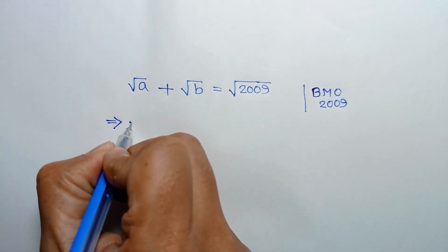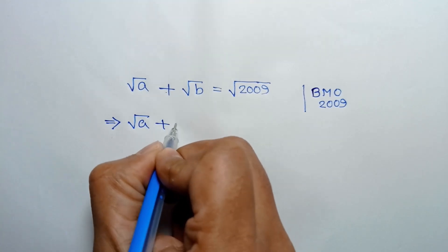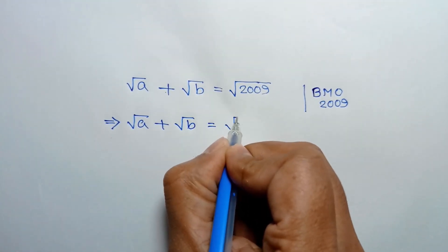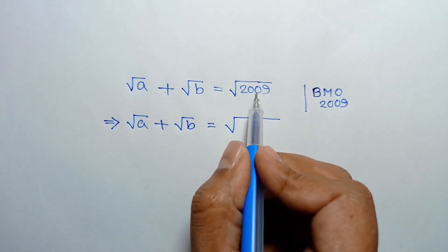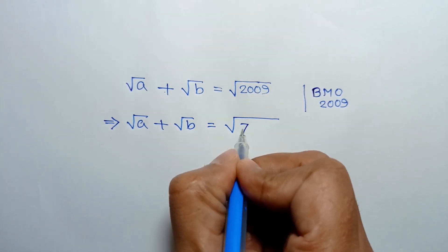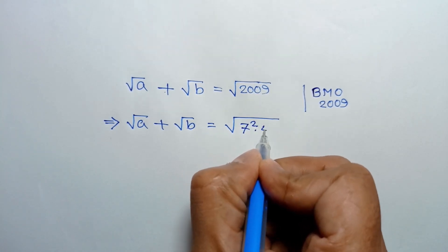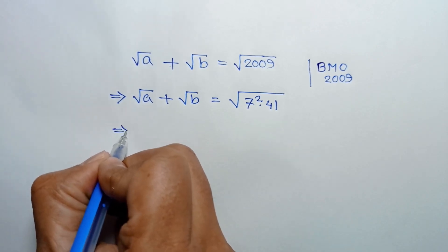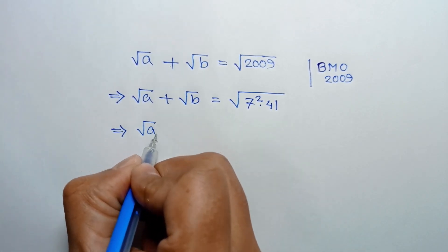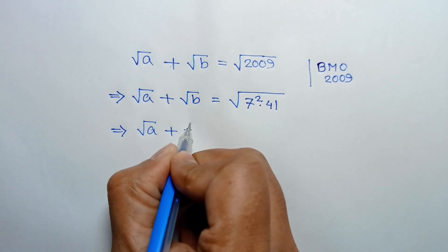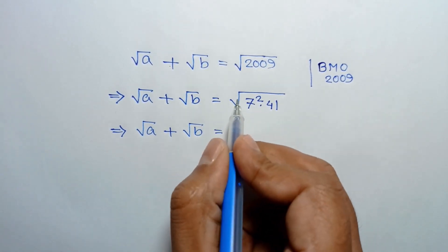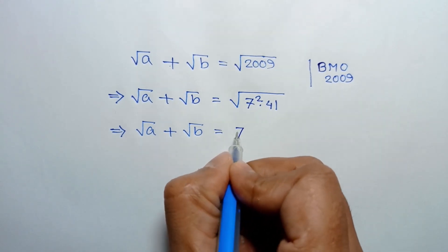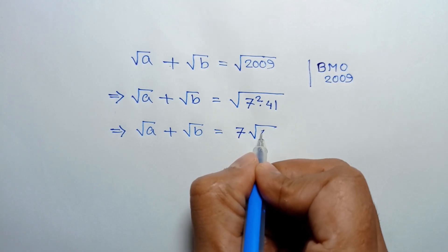We rewrite square root of 2009 as the square root of its prime factorization. 2009 equals 7 squared times 41. So square root of a plus square root of b equals square root of 7 squared times 41, and the square root and square cancel, leaving 7 times square root of 41.